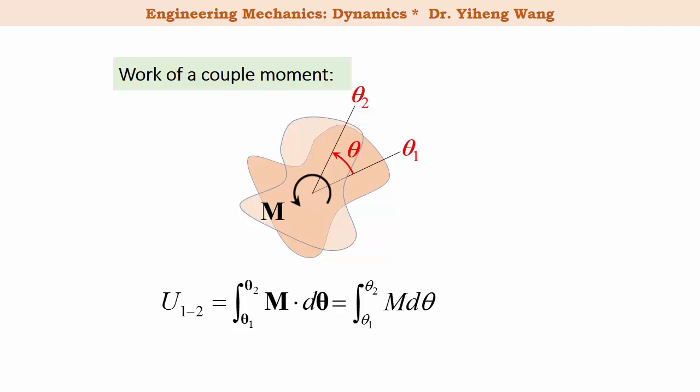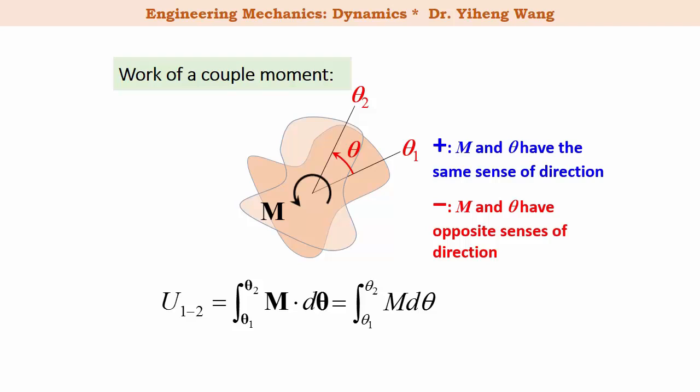The work done by this moment is positive when the two vectors are of the same direction, and negative when they are of opposite direction. A special case is when the moment has a constant magnitude — then its work is simply M times the difference between the initial and final angular position of this rigid body.